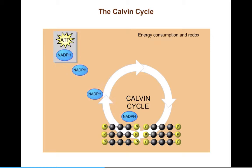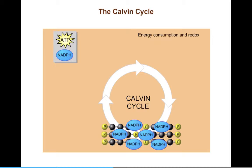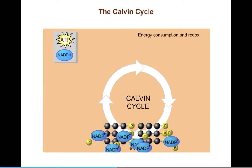Six molecules of NADPH are oxidized, providing electrons to six three-carbon compounds. The electrons from NADPH reduce the six three-carbon compounds, creating six high-energy G3P molecules.